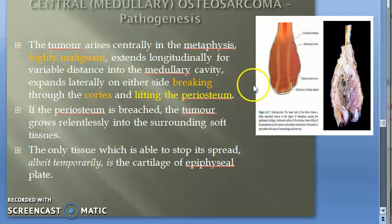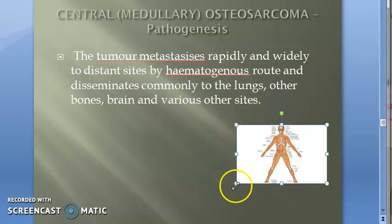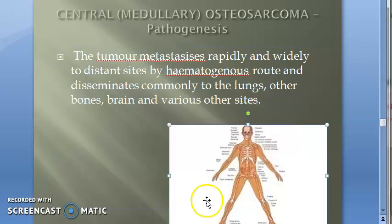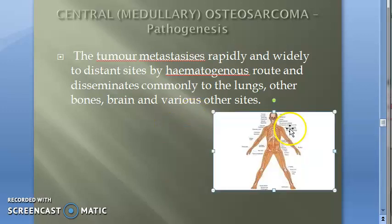From the surrounding soft tissue, the tumor can metastasize widely. It can metastasize to the lungs, other bones, and the brain. Because of this wide metastatic potential, osteosarcoma carries a very poor prognosis.